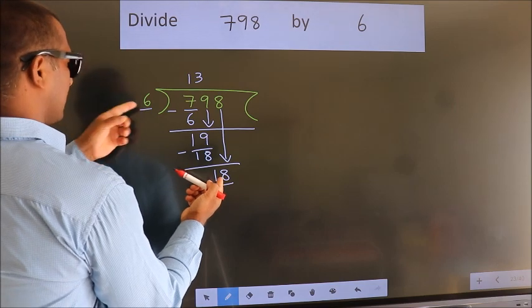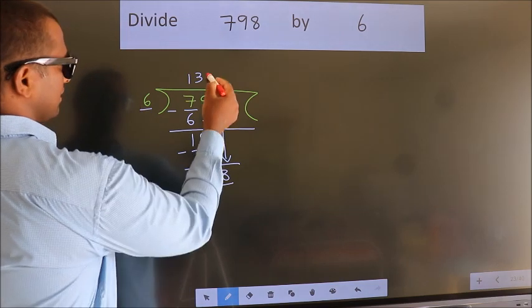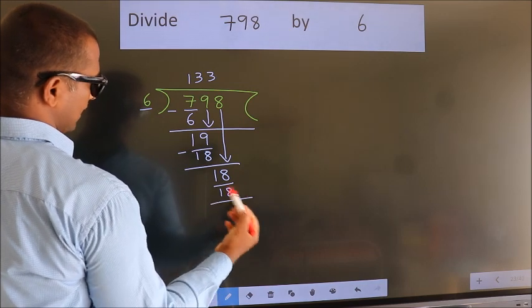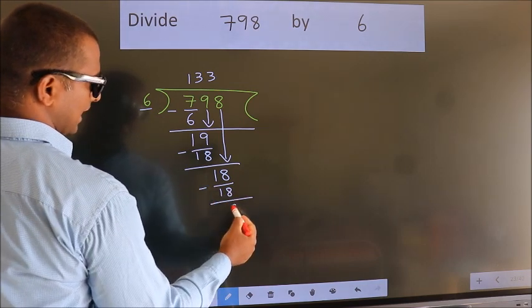When do we get 18? In 6 table. 6 threes, 18. Now we subtract. We get 0.